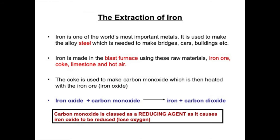The extraction of iron is one of the world's most important industrial processes. Iron is one of the most important metals and is used to make the alloy steel. Steel is an alloy because it's a mixture of iron and other elements, and we rely on steel to make cars, bridges, buildings, ovens, microwaves, washing machines, etc. Iron is made in a process called the blast furnace process and the raw materials needed are iron ore, coke, limestone and hot air.